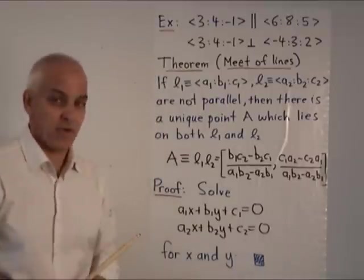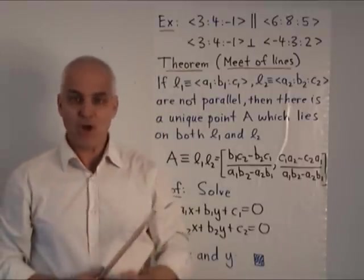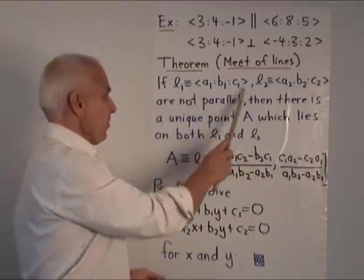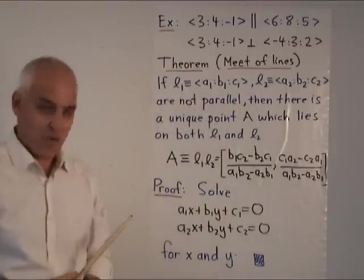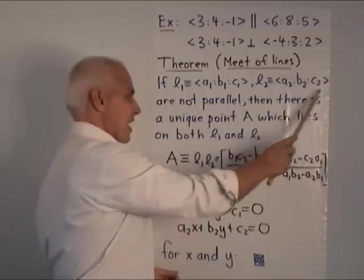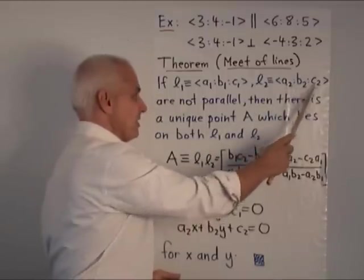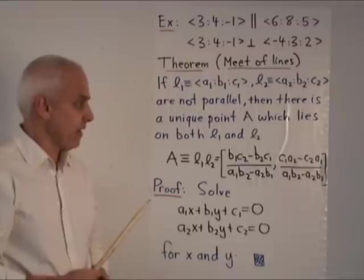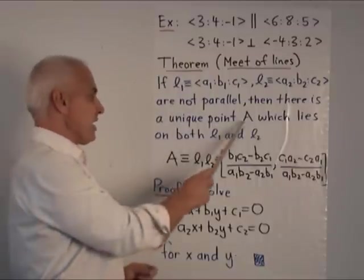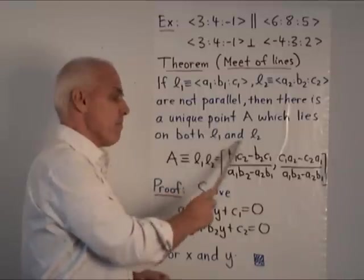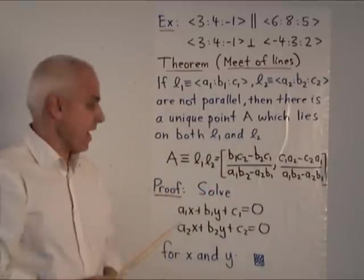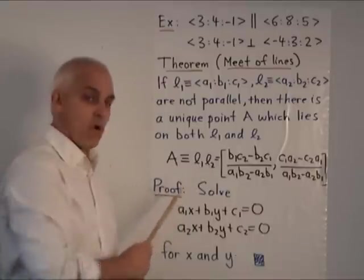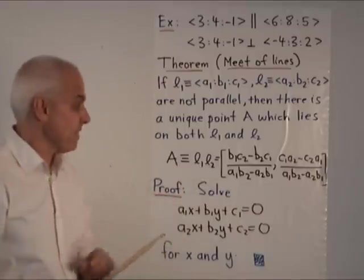Now here we have a theorem which we call the meet of the lines theorem. If L1 is the line with coefficients <a₁:b₁:c₁> and L2 is the line with coefficients <a₂:b₂:c₂>, if these are not parallel lines, then there is a unique point A which lies on both of them.